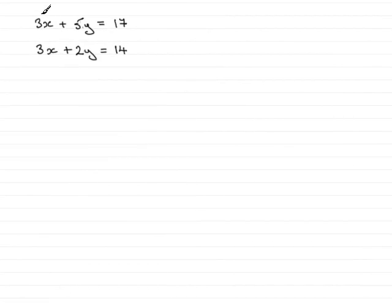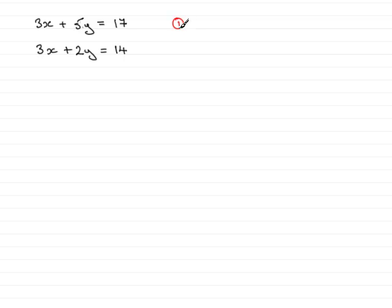In this example we've got to solve the simultaneous equations 3x plus 5y equals 17 and 3x plus 2y equals 14. The first thing we need to do in any simultaneous equations is number them so we can identify them easily, so I'll number them 1 and 2.